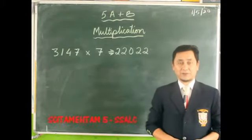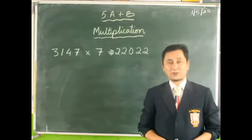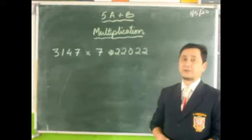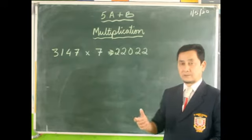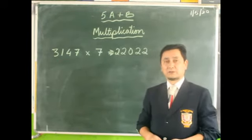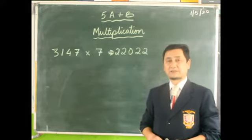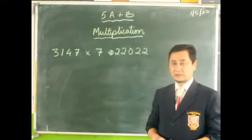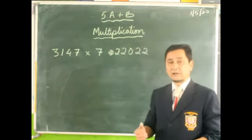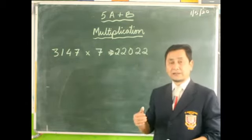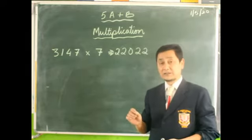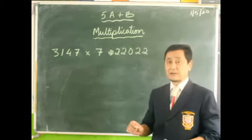Good morning dear children. We are going to continue with mathematics. Let's remind what we did in the previous class: we did multiplication by tens, hundreds, thousands, and ten thousands. We learned that when you multiply any number with ten, hundred, thousand, and ten thousand, you just add zeros — you write the same number and add the zeros.